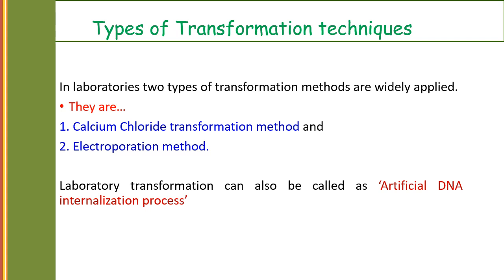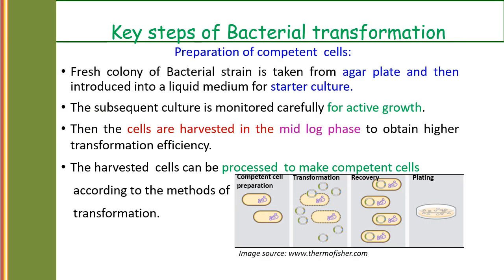What are the different types of transformation methods? In laboratories, two types of transformation methods are widely applied: the calcium chloride transformation method and the electroporation method. Laboratory transformation can also be called the artificial DNA internalization process. The key steps involved in bacterial transformation begin with the preparation of competent cells. A fresh colony of bacterial strain is taken from the agar plate and introduced into a liquid medium for a starter culture. The subsequent culture is monitored carefully for active growth. The cells are then harvested in the mid-log phase to obtain higher transformation efficiency. The harvested cells can then be processed to make competent cells according to the method of transformation.